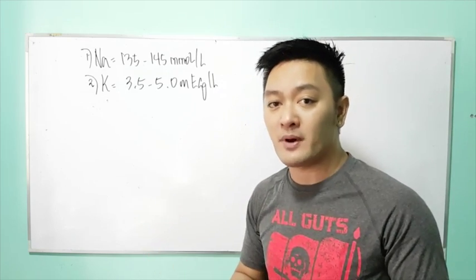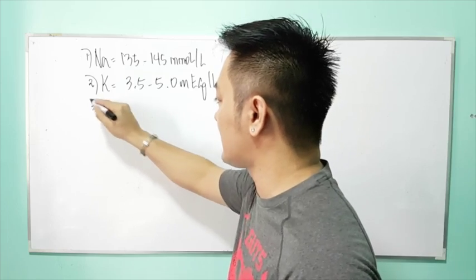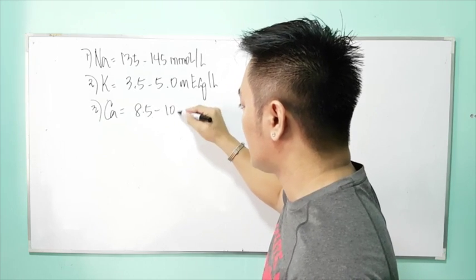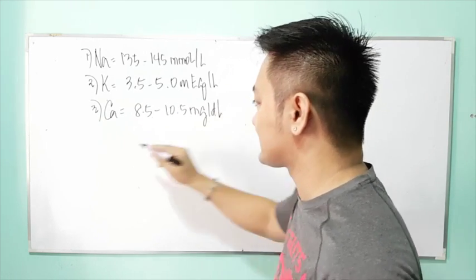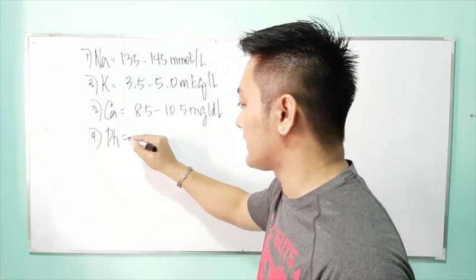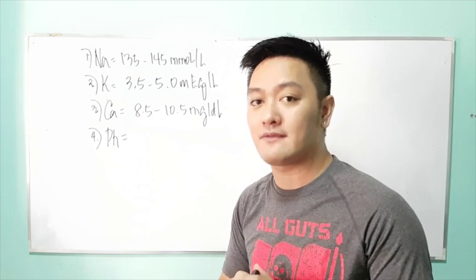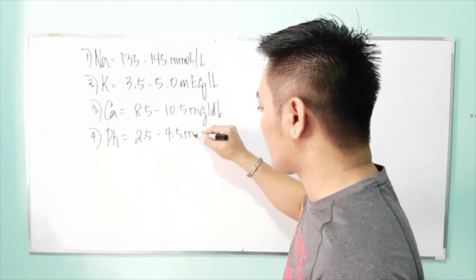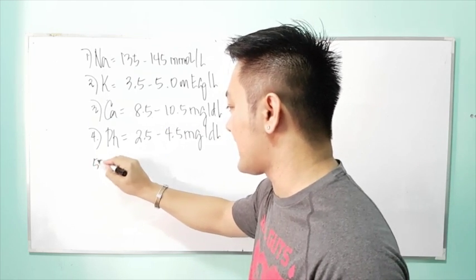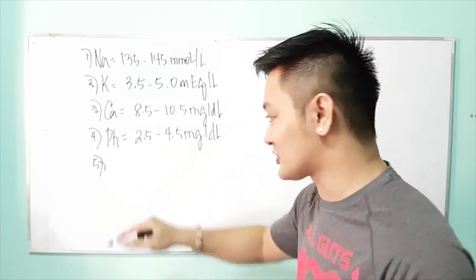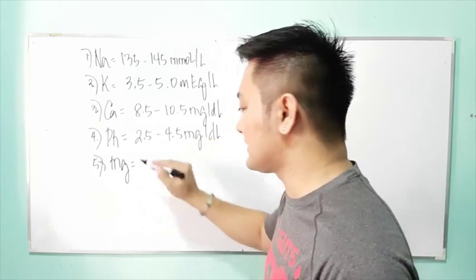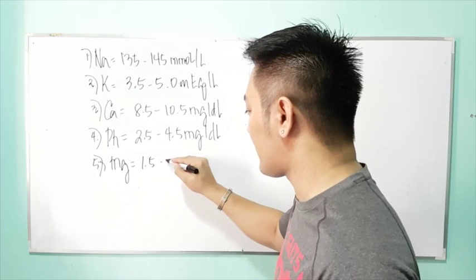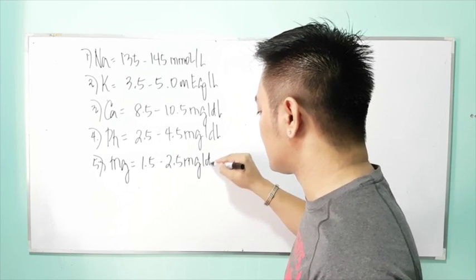Some books list potassium as 3.5 to 5.5. Another electrolyte is calcium, with a normal level of 8.5 to 10.5 milligrams per deciliter. Phosphate has a normal range of 2.5 to 4.5 milligrams per deciliter. The last electrolyte to remember is magnesium, with a normal range of 1.5 to 2.5 milligrams per deciliter.